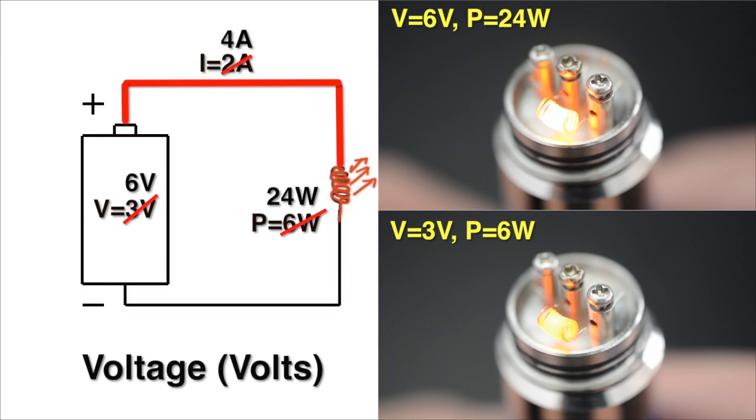You can see the coil is brighter at 6 volts versus 3 volts. The contrast is a little high, but it's more noticeable if you look at the reflection.